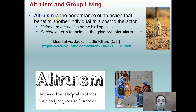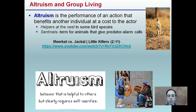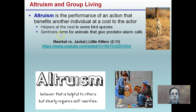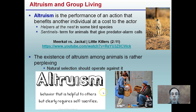Altruism in group living: altruism is the performance of an action that benefits another individual at a cost to the actor. Examples include helpers at the nest in some bird species. Sentinels are animals that give predator alarm calls — the meerkat is a good example. A meerkat specifically is on the lookout for potential harm to the community, sounds a call, and lets all individuals know. This comes at a cost because they're constantly scouting and alerting others. Natural selection should operate against altruism because of this cost to the individual.